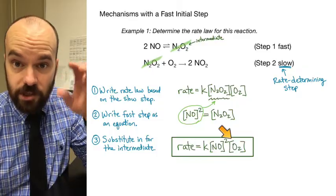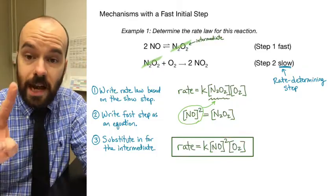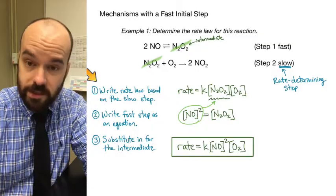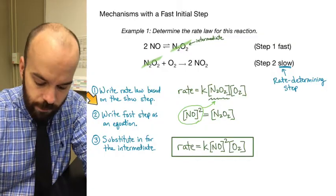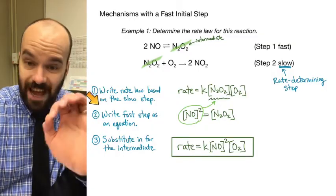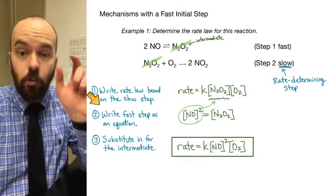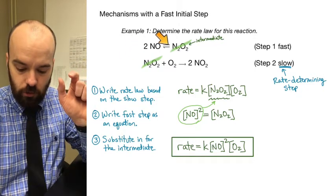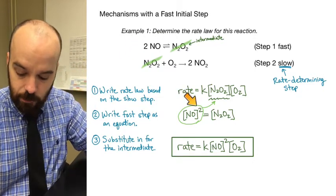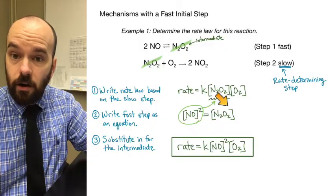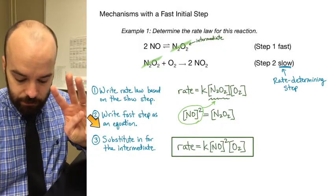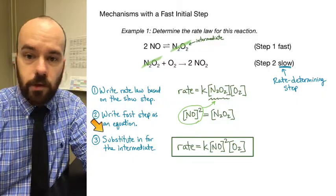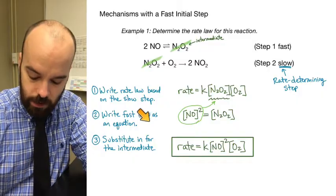To recap those three steps: first, write the rate law based on the slow step just as we normally would. Second, write the fast step as a mathematical equation, using the coefficients in the reaction as the exponents. Third, substitute in for the intermediate so that no intermediate appears in the final rate law.